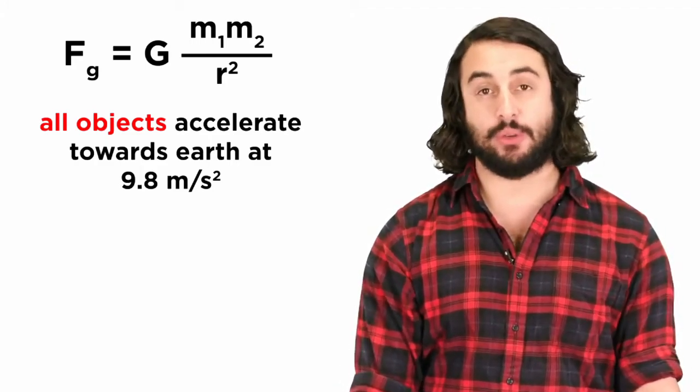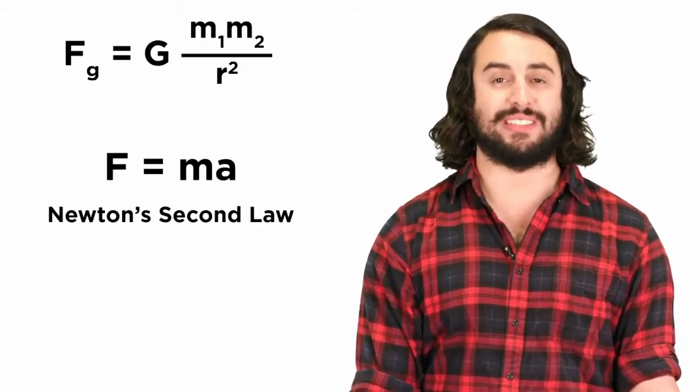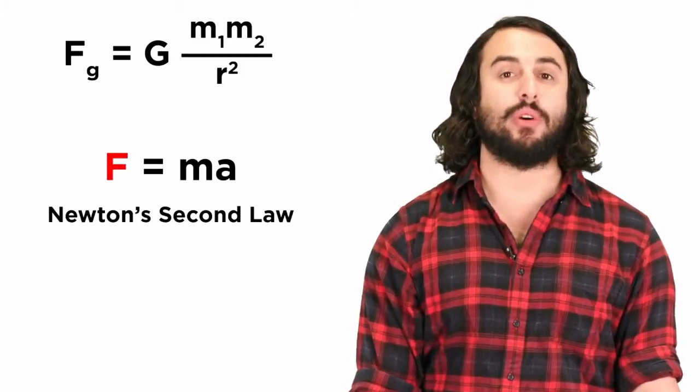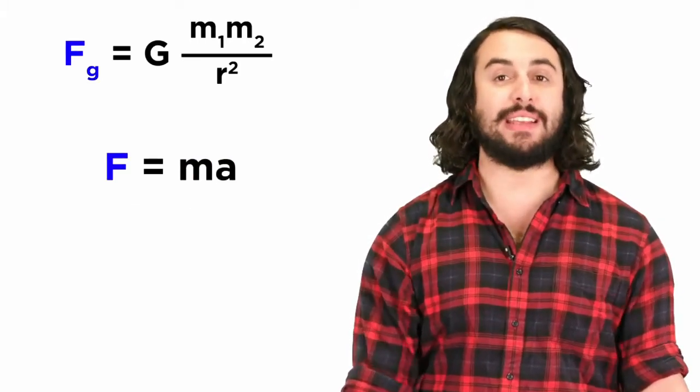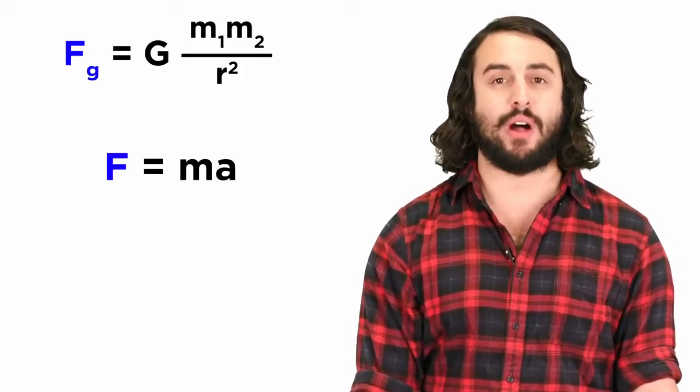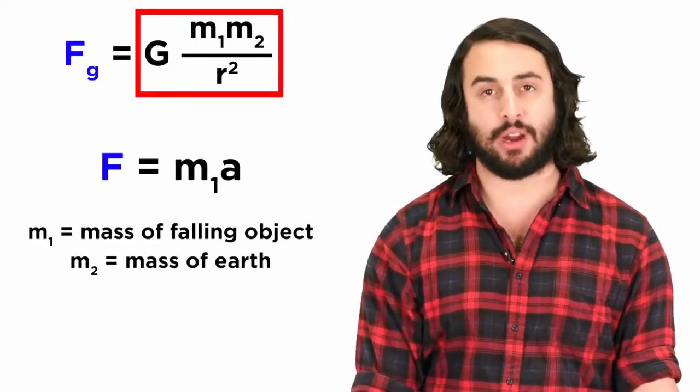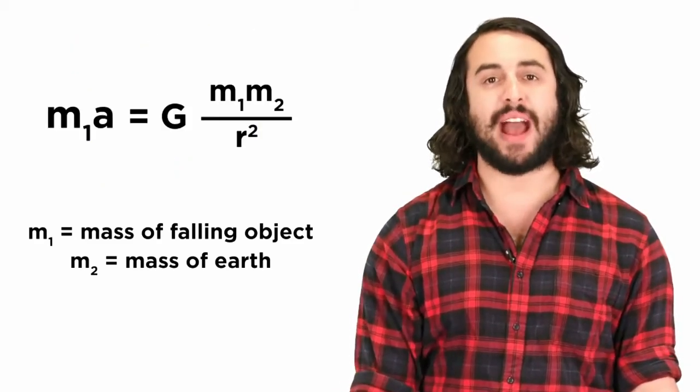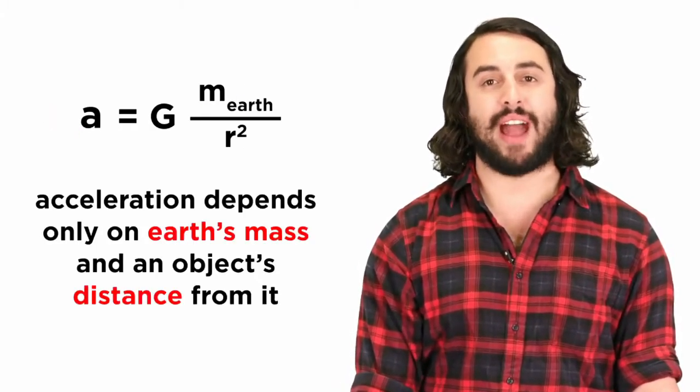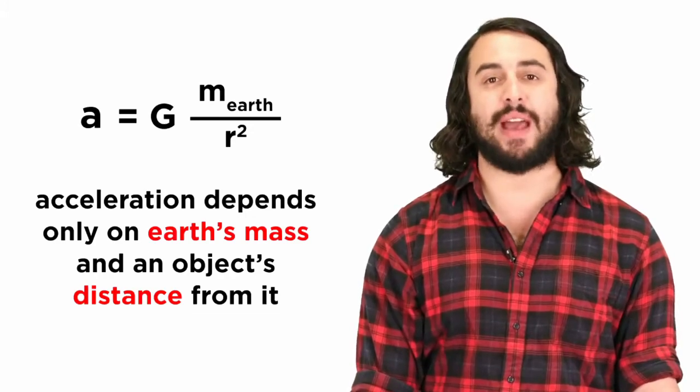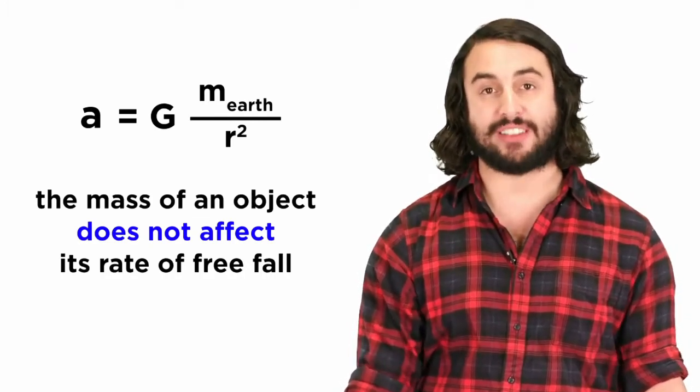This fact is easy to derive if we do some algebraic manipulation. We know that a falling object exhibits behavior according to Newton's second law, F equals MA, where the force that generates the falling is equal to the mass of the object times its acceleration. But this force is the gravitational force, so we can also model the falling behavior with G M1 M2 over R squared, where M1 is the mass of the object and M2 is the mass of the earth. If we set these equal to each other, the mass of the object is found on both sides and will cancel out, so we can see that the acceleration due to gravity is equal to the gravitational constant times the mass of the earth divided by the radius squared. This means that the mass of an object does not affect the rate of freefall.